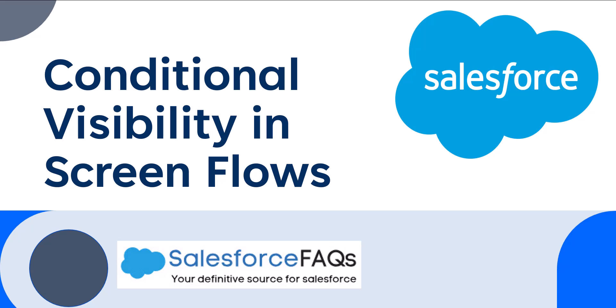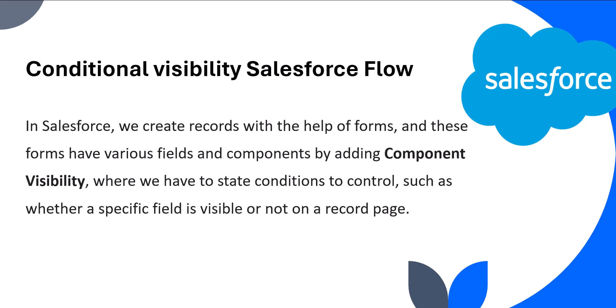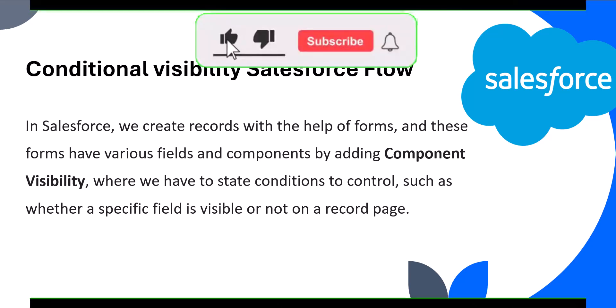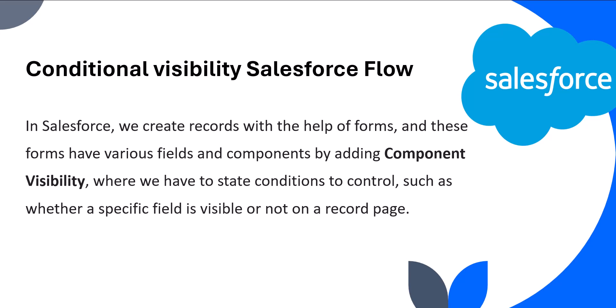Before creating the flow, we first need to understand what component visibility is and what are the uses of adding component visibility to the flow. The feature of adding conditional visibility lets you control what components appear on the screen, allowing a more personalized and dynamic user experience. Whether you are working with sales, service, or any other department, this feature can make your screen flows more intuitive and effective.